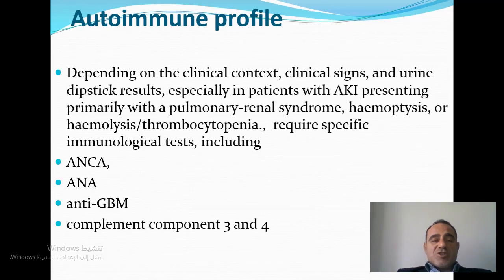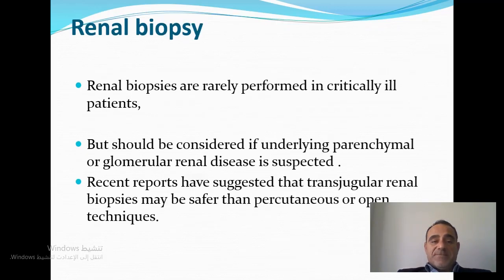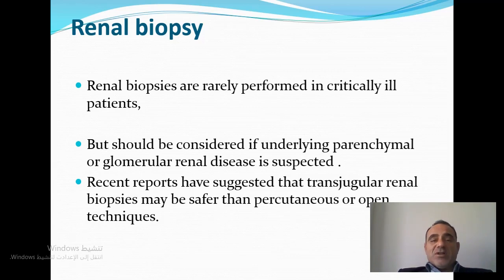In cases where autoimmune disease is suspected, based on clinical context, clinical signs, and urine sediment, pulmonary-renal syndrome should be considered if there is hemoptysis or thrombocytopenia, requiring specific tests such as ANCA and anti-GBM antibody. Renal biopsy in AKI is rarely performed but should be considered if the underlying cause could be a parenchymal or glomerular disease. Recent reports suggest that in critically ill patients, a transjugular approach is safer than percutaneous or open techniques, to minimize bleeding risk.